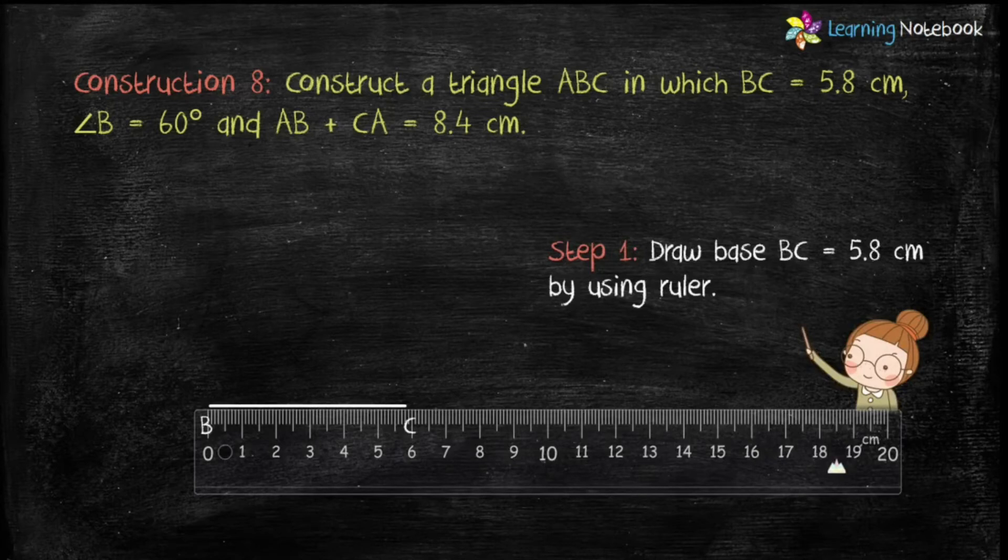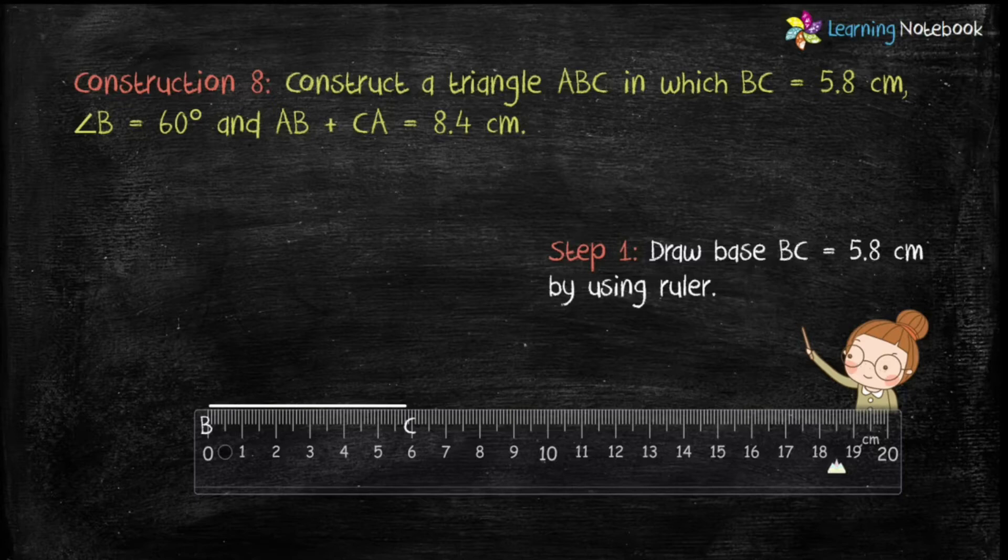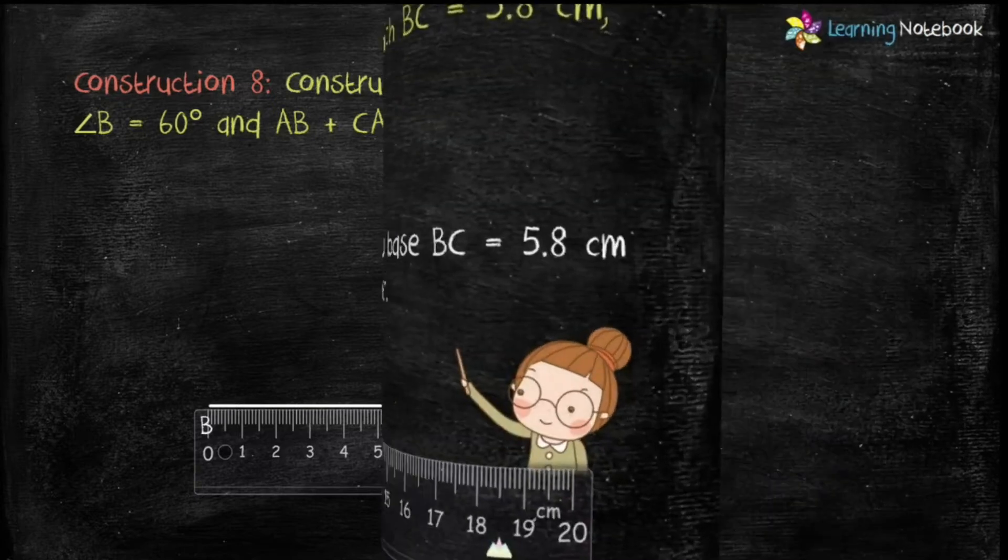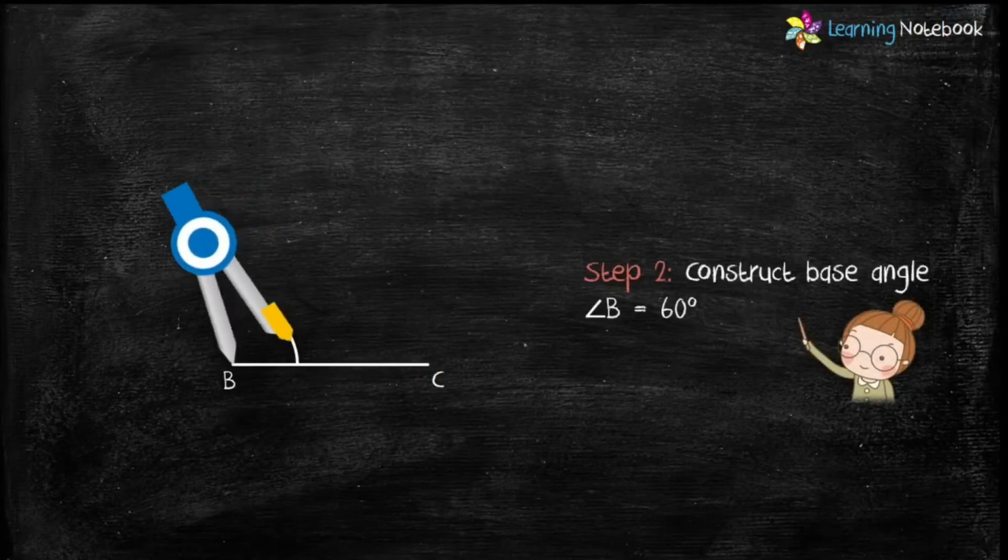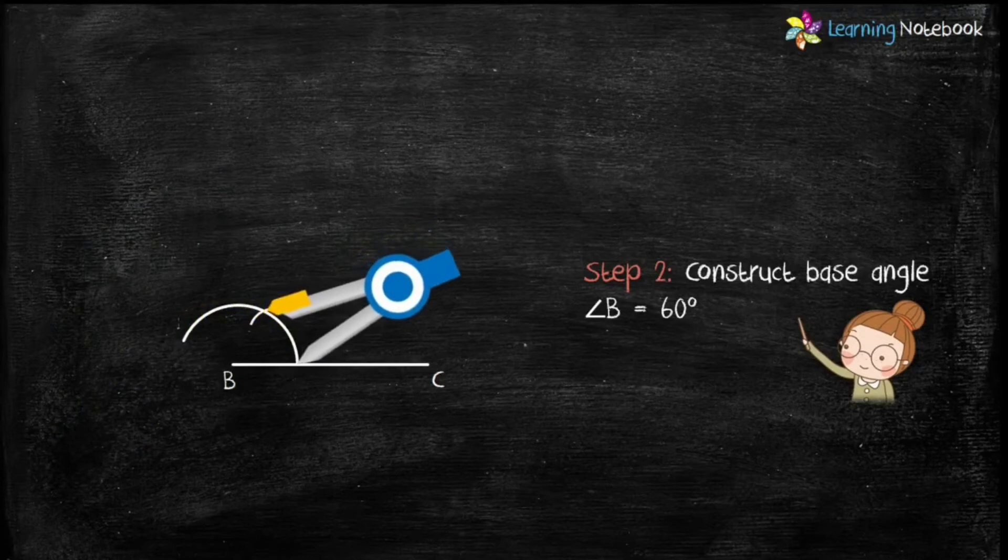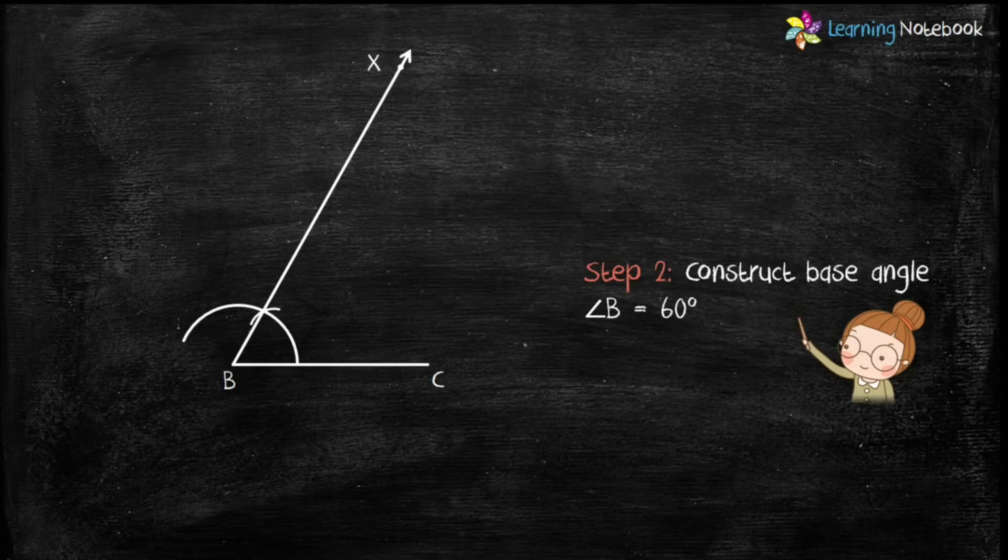Step 2 is construct base angle B equals 60 degrees. You may refer to Part 3 of this chapter to learn step by step how to construct an angle of 60 degrees.